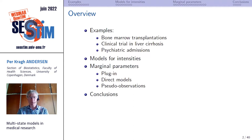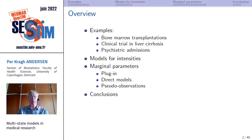I will start by giving some examples where multistate models have been useful in addressing scientific questions. They come from different medical fields: bone marrow transplantation, liver cirrhosis, and psychiatry. I will then turn to two classes of models: models based on intensities, and models based on marginal parameters. I have a small list of conclusions towards the end.